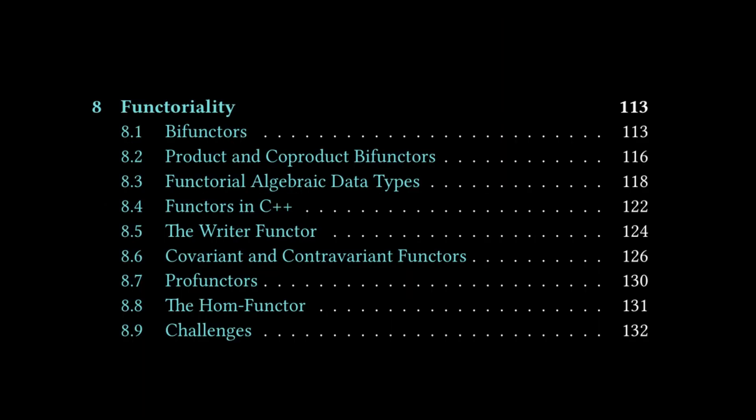But let's hop into the table of contents. So here we are, chapter 8, functoriality. We've got bifunctors, product and coproduct bifunctors, functorial algebraic data types, functors in C++, the writer functor, covariant and contravariant functors, profunctors, and the hom functor. We are going to touch on bifunctors, covariant and contravariant functors and profunctors. And we will leave the rest to the watcher or the listener to follow up in reading the chapter.